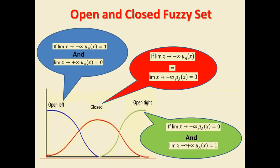Open fuzzy sets are of two types: open left and open right. A fuzzy set is called open left when, as x moves towards negative infinity, the membership value will always be one. Beyond that boundary, it carries a value of one everywhere. On the other hand, when x moves towards positive infinity, the membership value will be zero. In that case, this fuzzy set is called open left.